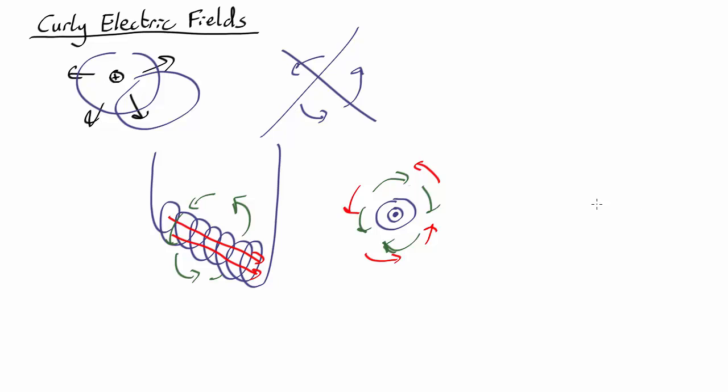An alternative situation, let's say you have a solenoid and now you have a magnetic field that's pointing into the screen, away from you. If this one's getting bigger, then the curly electric field is like this. If it's getting smaller, the curly electric field is going like that.